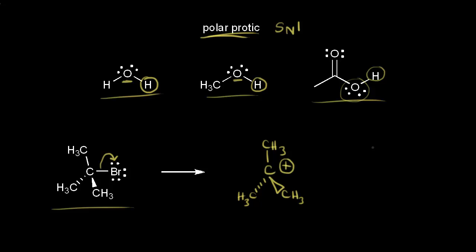We're also going to have our bromine, which has three lone pairs of electrons. We'll get one more lone pair of electrons on the bromine that came from this bond — highlighting those electrons in magenta. Bromine has a negative one formal charge; it is the bromide anion. So we have this carbocation and this anion in our SN1 mechanism, and we know this is the rate-determining step: loss of a leaving group.